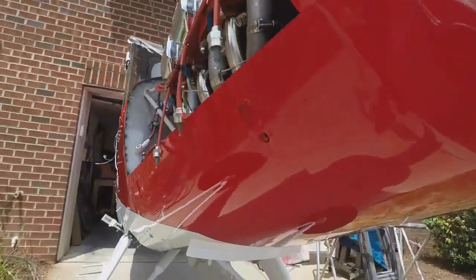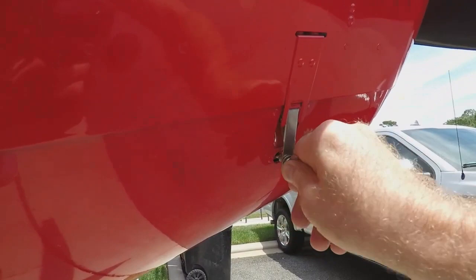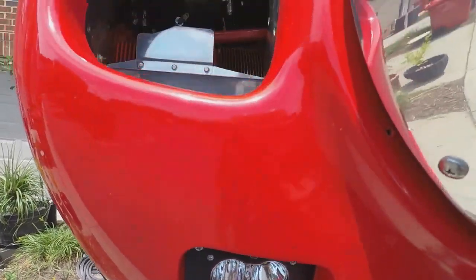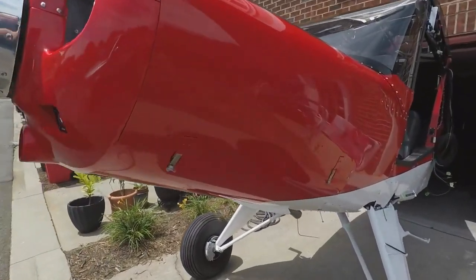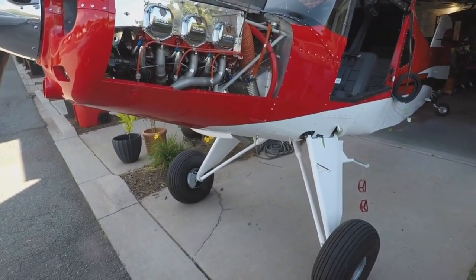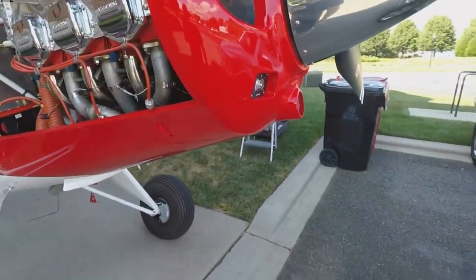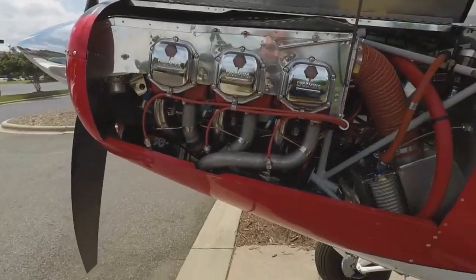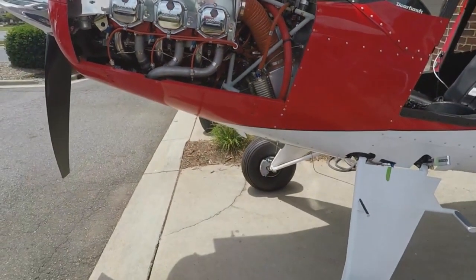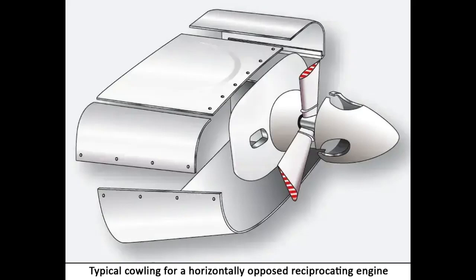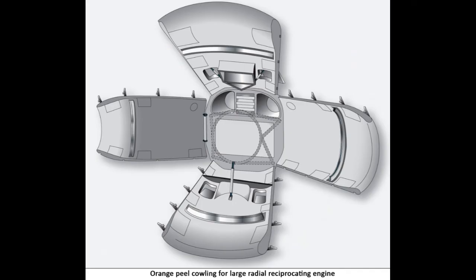Cowling refers to the detachable panels covering those areas into which access must be gained regularly, such as the engine and its accessories. It is designed to provide a smooth airflow over the nacelle and to protect the engine from damage. Cowl panels are generally made of aluminum alloy construction; however, stainless steel is often used as the inner skin aft of the power section and for cowl flaps and near cowl flap openings, as well as for oil cooler ducts. Cowl flaps are movable parts of the nacelle cowling that open and close to regulate engine temperature. Some large reciprocating engines are enclosed by orange peel cowlings, which provide excellent access to components inside the nacelle.